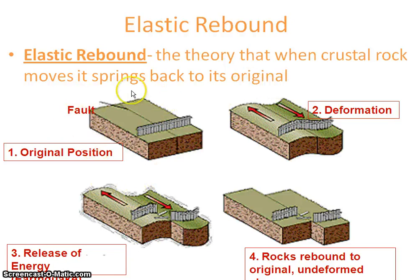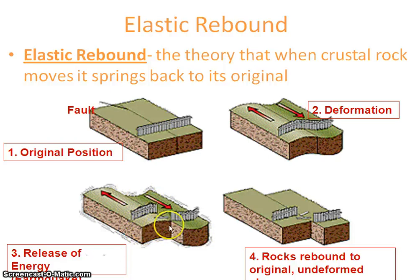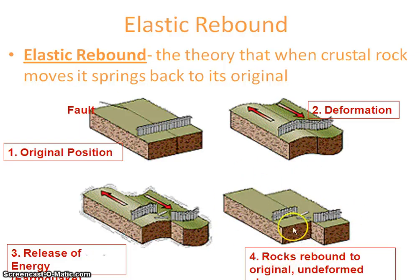Here you can see the original position of the rock. The second figure shows the deformation due to an earthquake — some vertical or horizontal force causes the plate to move. The third stage shows the release of energy. Due to the fault region, the rock slides, releasing energy, and then the rocks rebound to their original undeformed position.